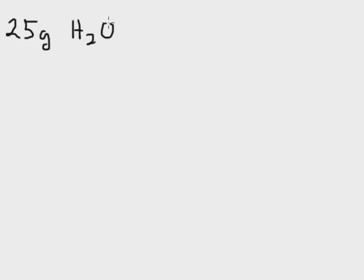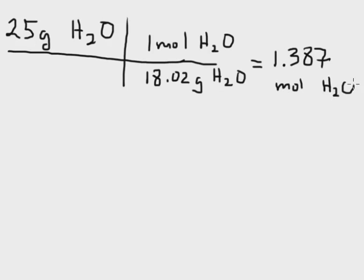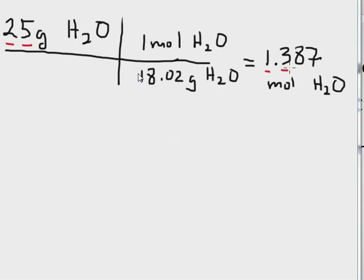Here's the calculation for the number of moles of water. We have a 25 gram sample, and we divide by the molar mass of 18.02 grams per mole — grams cancel — giving us 1.387 moles of water. There are two sig figs in 25 grams, so we'll keep two sig figs for the final answer, but I've kept guard digits, the 8 and the 7, in the intermediate calculations to avoid rounding errors.